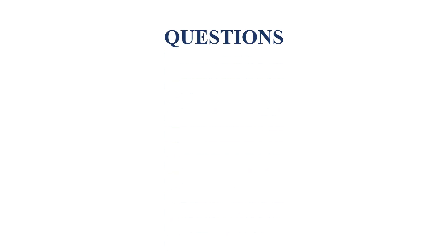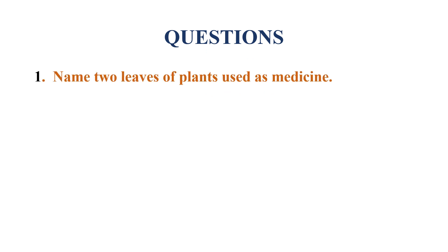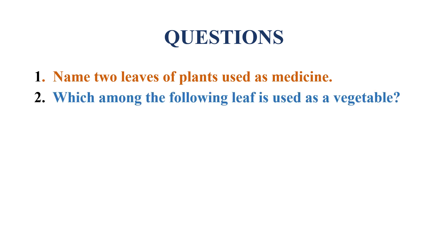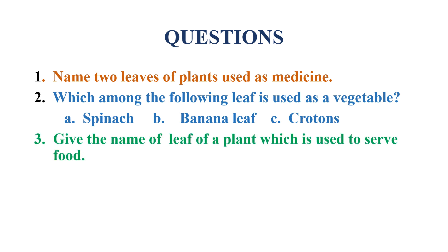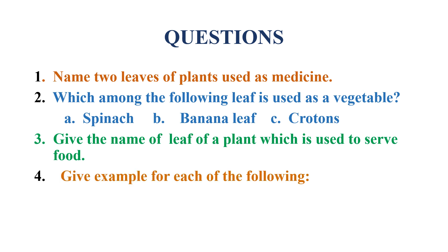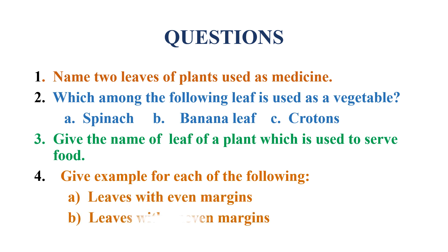Questions. First question: Name two leaves of plants used as medicine. Second question: Which among the following leaf is used as a vegetable? Option A: Spinach. Option B: Banana leaf. Option C: Crotons. Third question: Give the name of a leaf of a plant which is used to serve food. Fourth question: Give an example for each of the following — A: Leaves with even margins. B: Leaves with uneven margins.